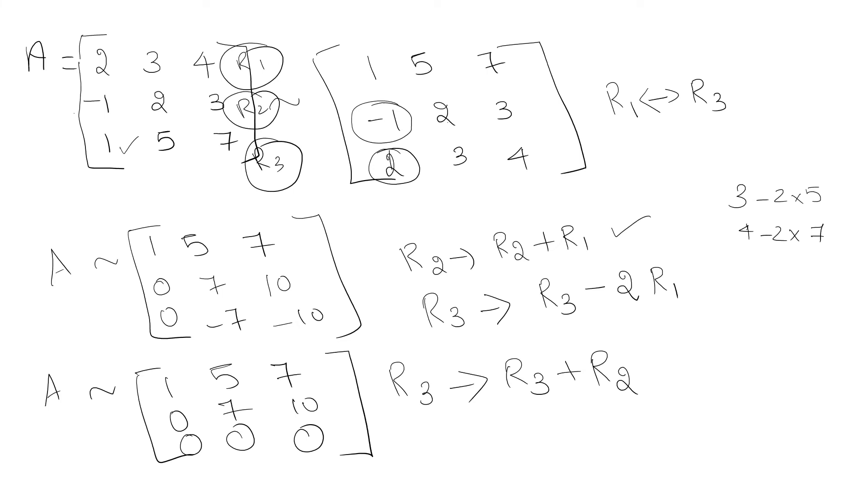Again, the first non-zero value should be 1. For this sake, I am going to do one small change. I am going to write A as 1, 5, 7. I am going to divide row 2 by 7. If I divide this by 7, it will become 0, 1, 10/7, and the last row is 0, 0, 0.